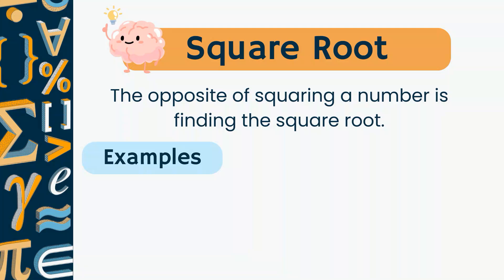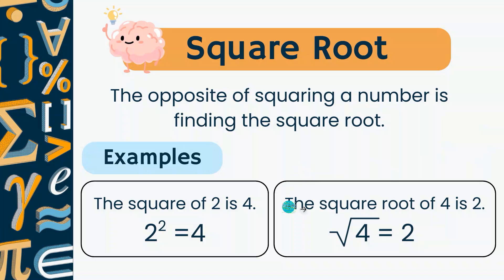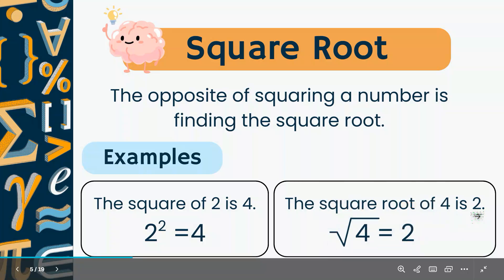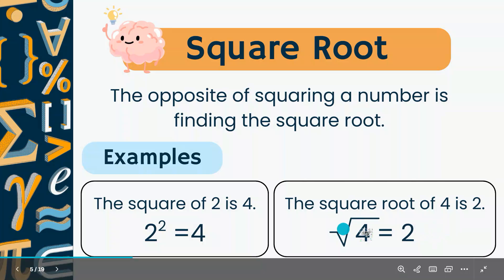Now let's look at something we want to learn today. The opposite of squaring a number is finding the square root of it. For example, 2 squared is 4 because 2 times 2 is 4, so the square root of 4 is 2. This is true because if you square the answer, you will get the number inside the square root. So if you square 2, you get 4 — that's why the square root of 4 is 2.